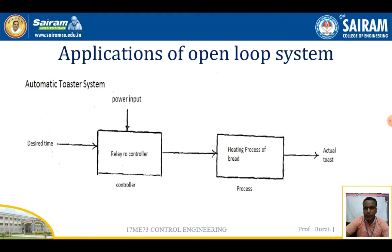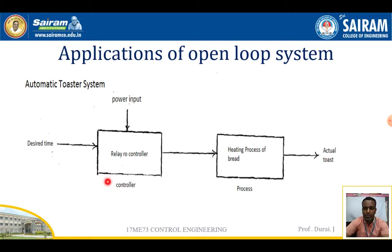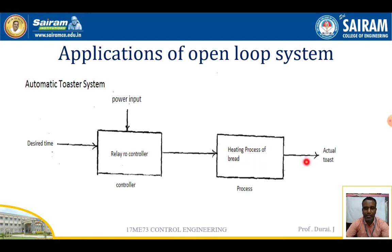Here we are going to see about the automatic toaster system. In the automatic toaster system, according to the desired time, the bread has to be toasted and comes as the output. The controller is the relay, and the process is the heating of the bread. According to the desired time, the bread is heated and comes out as toasted bread.